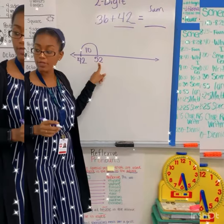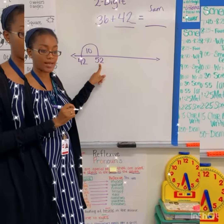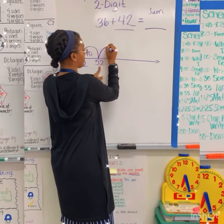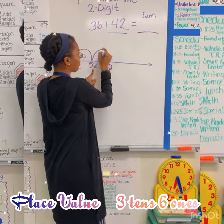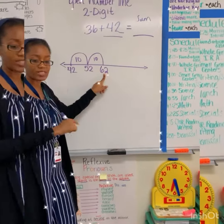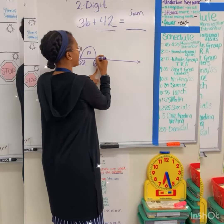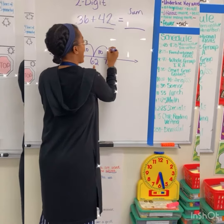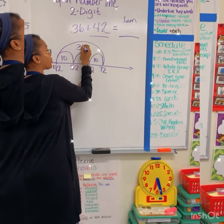If I am at 52 and I jump by 10 again, what's my next number? 62! Very good! So now we're at 20, we need to get to 30, so I'm going to jump by 10 again. What's my next number? 72! Excellent! So now I have jumped a total of 30.